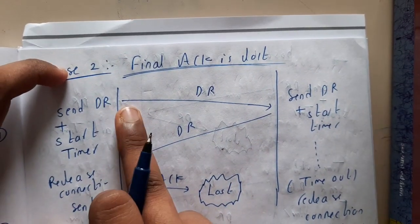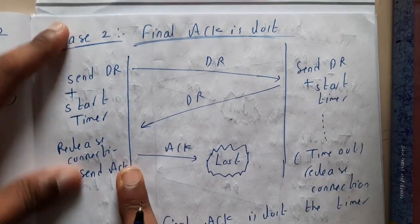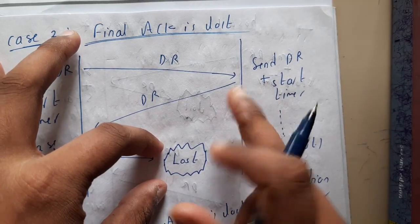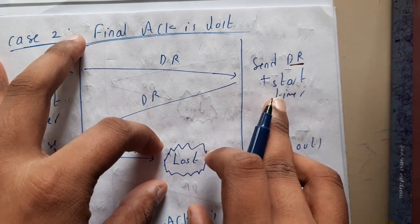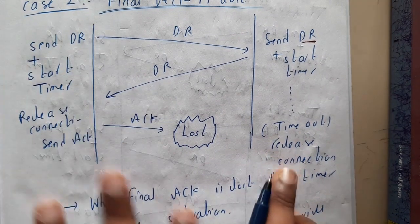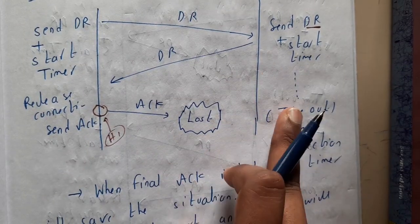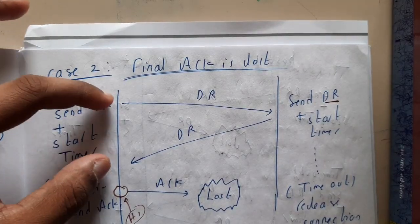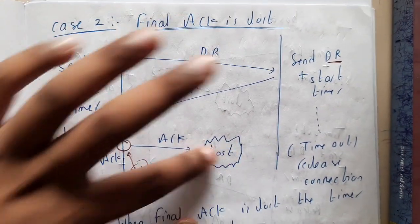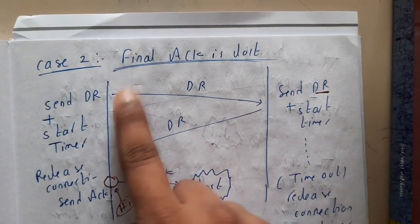Consider the case where the final acknowledgement is lost. Both you and the other host have sent release requests — both are ready to release — but you need to finalize it. You sent an acknowledgement but it was lost. In this situation, the other host waits for the timer to expire and then automatically releases the connection. Once Host 1's acknowledgement is sent, Host 1 also releases. After a timeout, the connection is released.